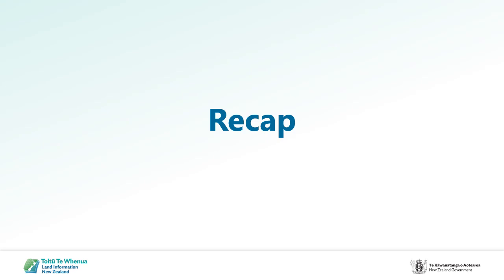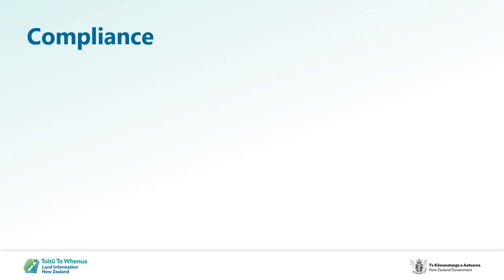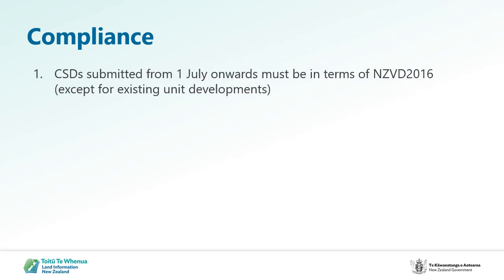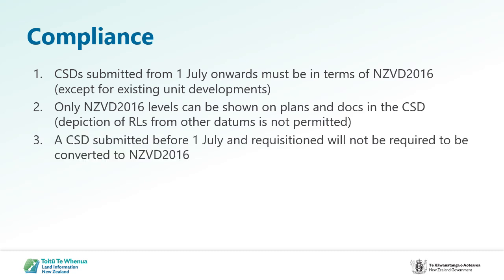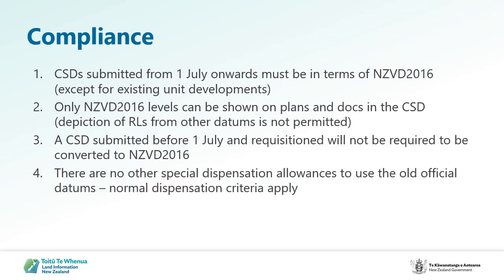So now for a recap. In terms of compliance: CSDs submitted from 1 July onwards must be in terms of NZVD 2016, except for existing unit developments. Only NZVD 2016 levels can be shown on plans and documents in the CSD — depiction of RLs from other datums is not permitted. A CSD submitted before 1 July and then requisitioned will not be required to be converted to NZVD 2016. There are no other special dispensation allowances to use the old official datums — normal dispensation criteria apply.